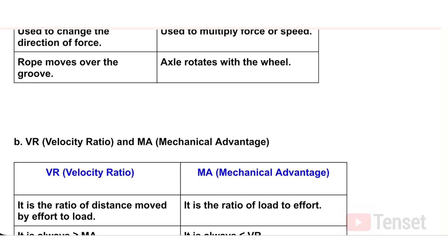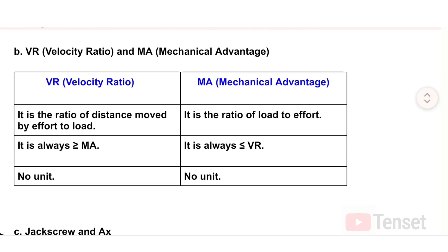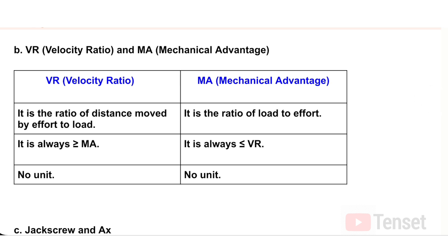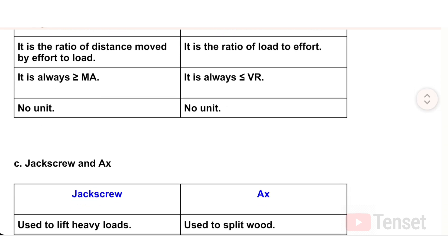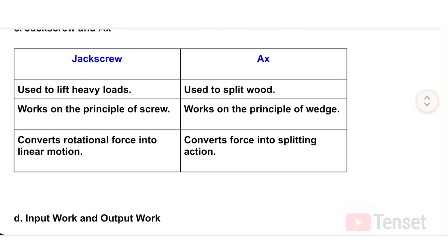B) VR (Velocity Ratio) vs. MA (Mechanical Advantage): VR is the ratio of distance moved by effort to distance moved by load; MA is the ratio of load to effort. VR is always greater than or equal to MA; MA is always less than or equal to VR. VR has no unit; MA also has no unit.